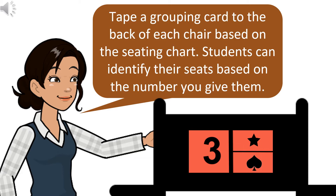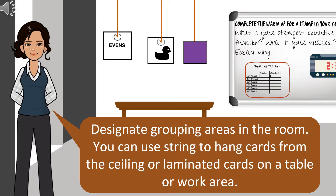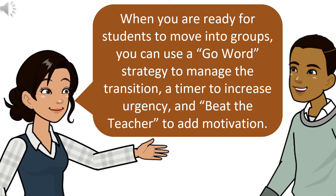Tape a grouping card to the back of each chair based on the seating chart. Students can identify their seats based on the number you give them. Designate grouping areas in the room. You can use string to hang cards from the ceiling or laminated cards on a table or work area. When you're ready for students to move into groups, you can use a go-word strategy to manage the transition, a timer to increase urgency, and Beat the Teacher to add motivation.